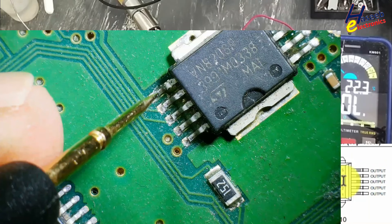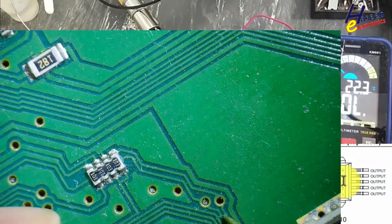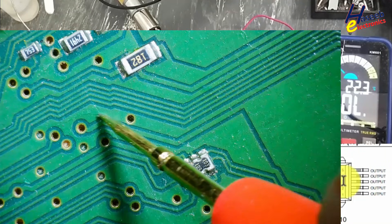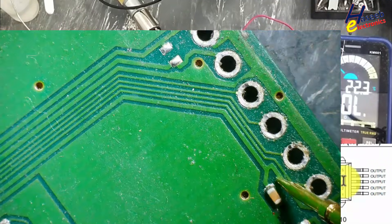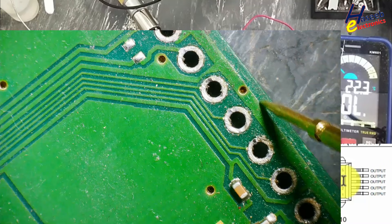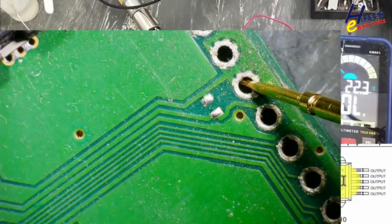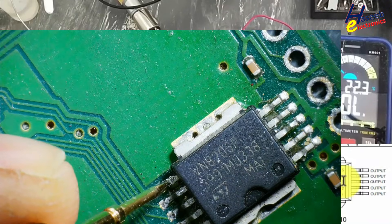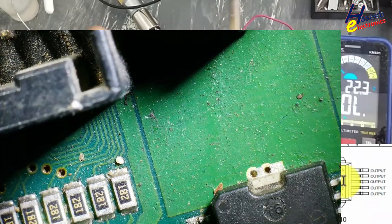Now if you see the ground pin, this ground is moving in this direction, then here, then it is reaching to the primary ground at this pin. Let's make connections.